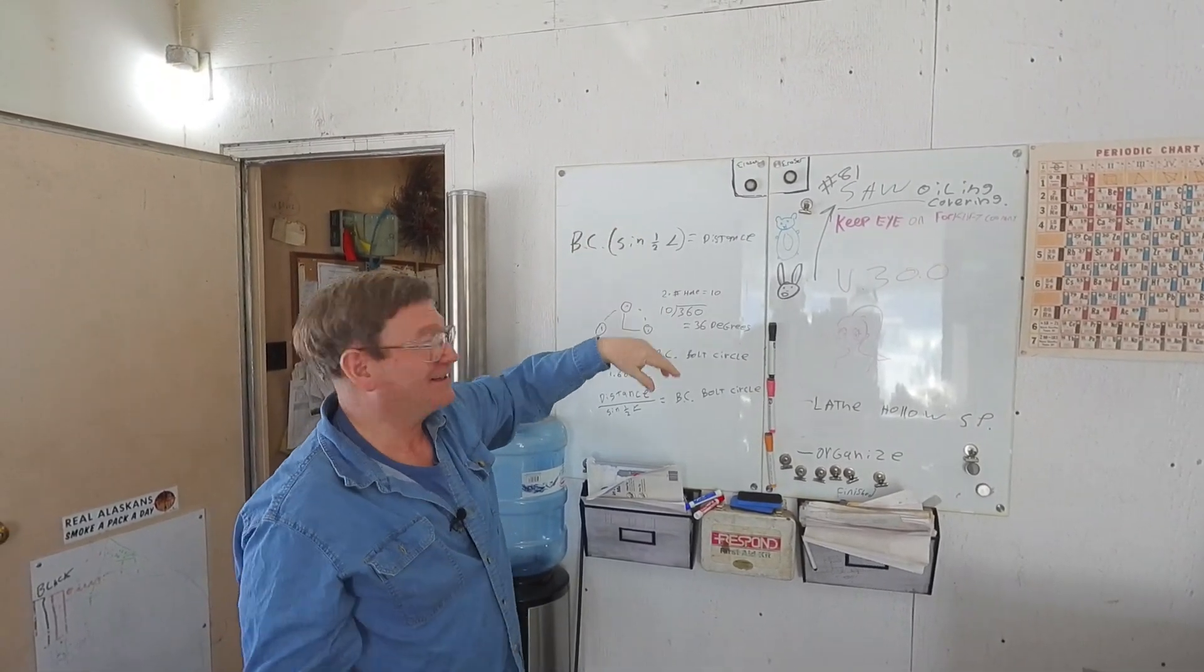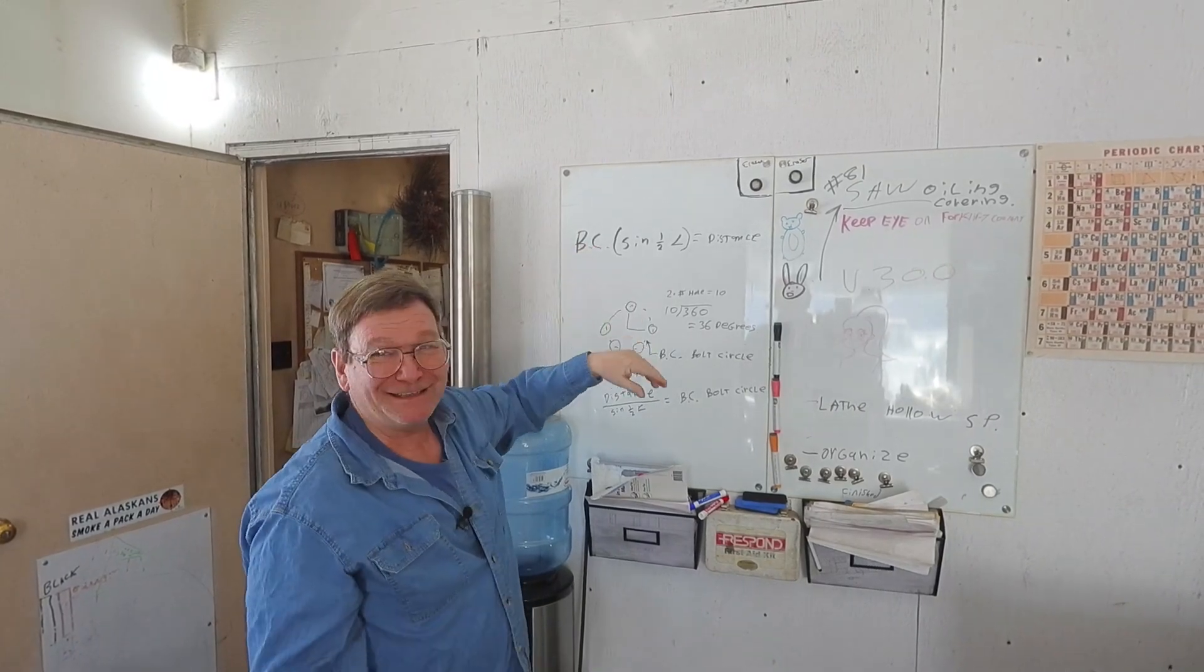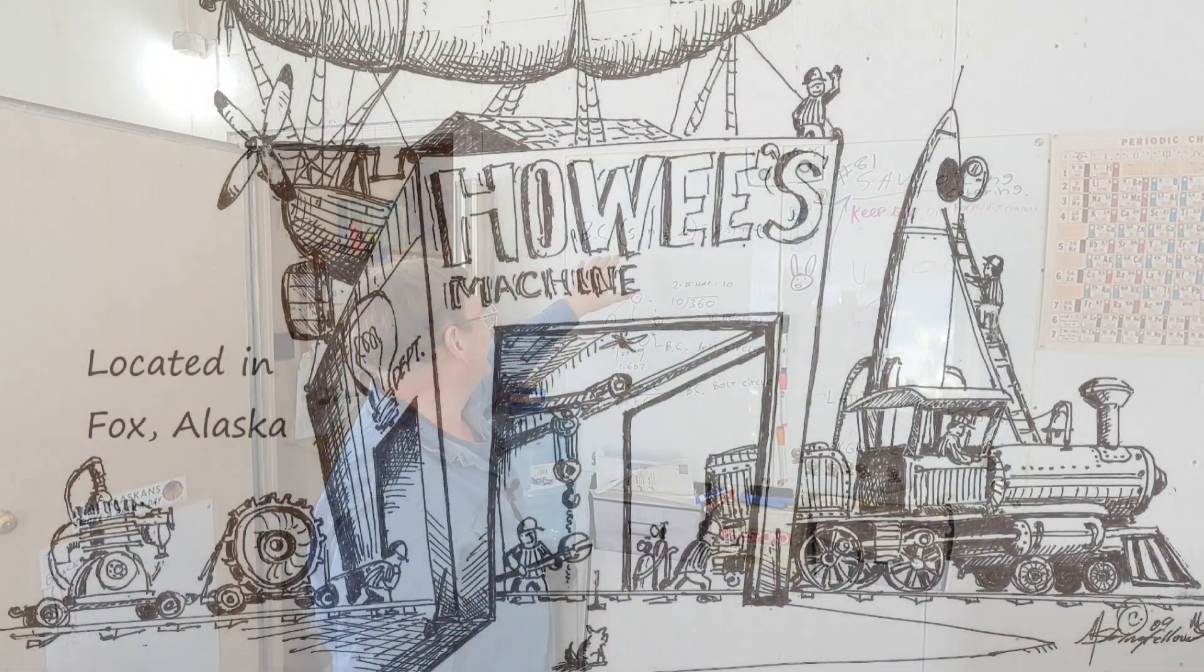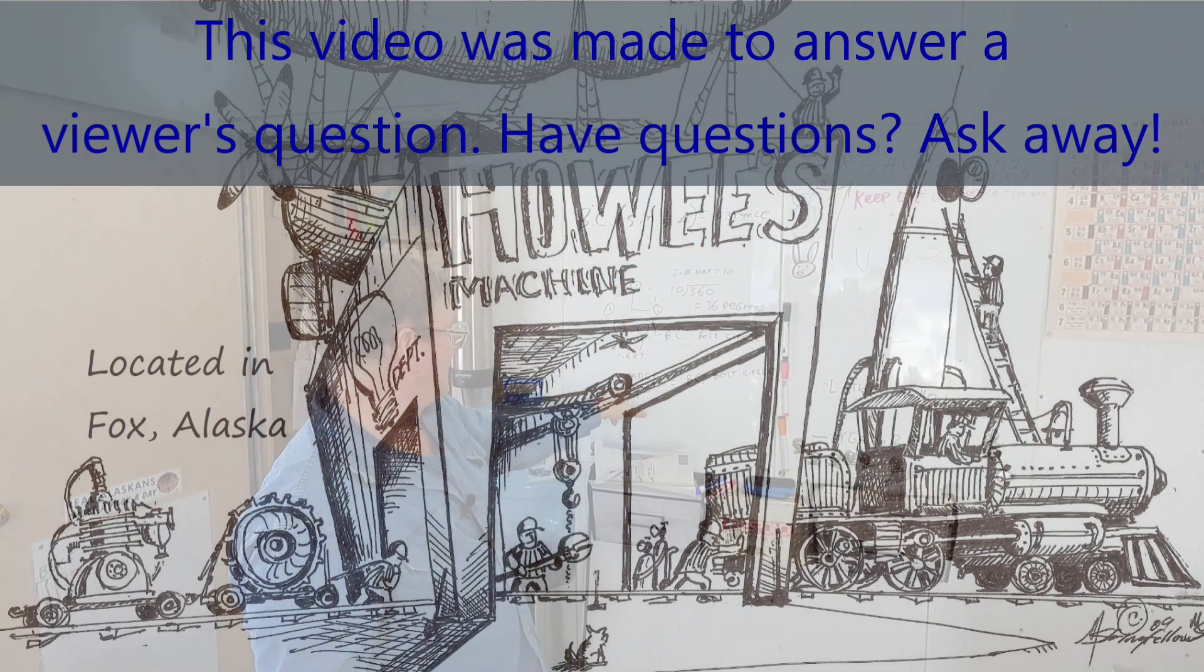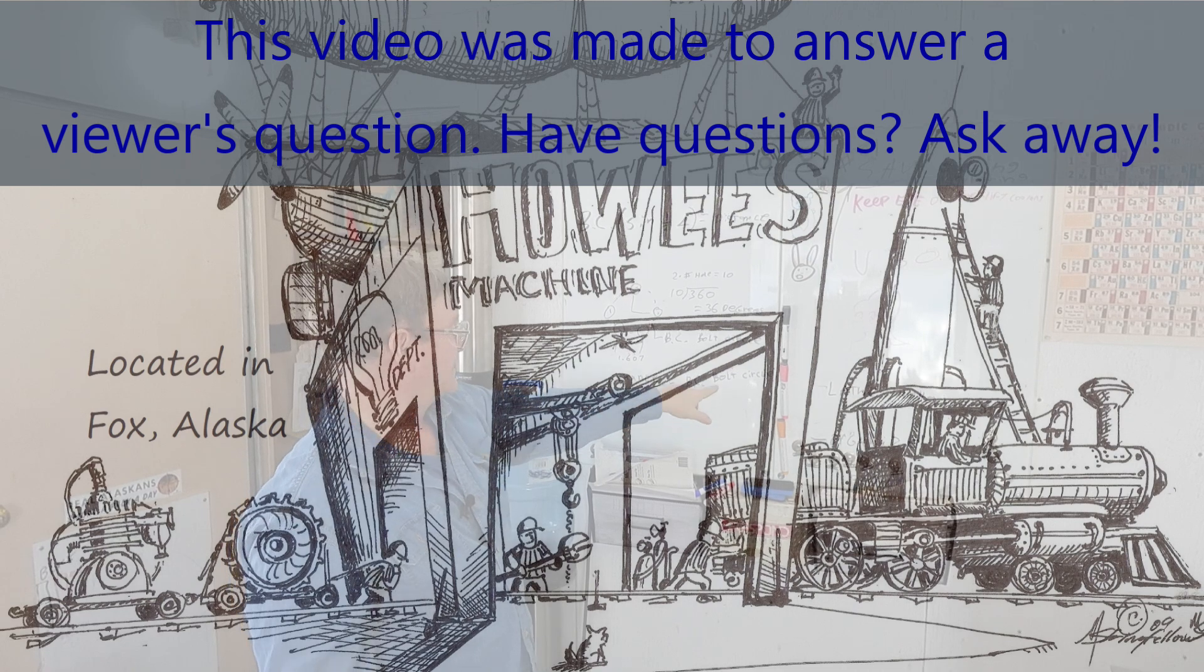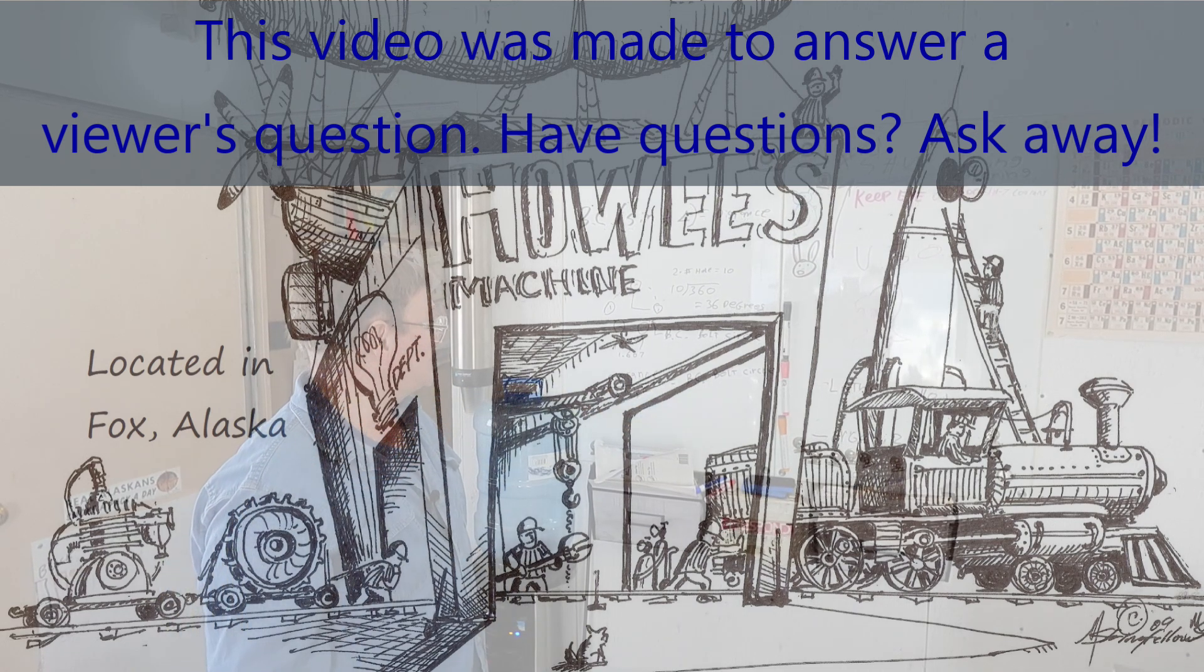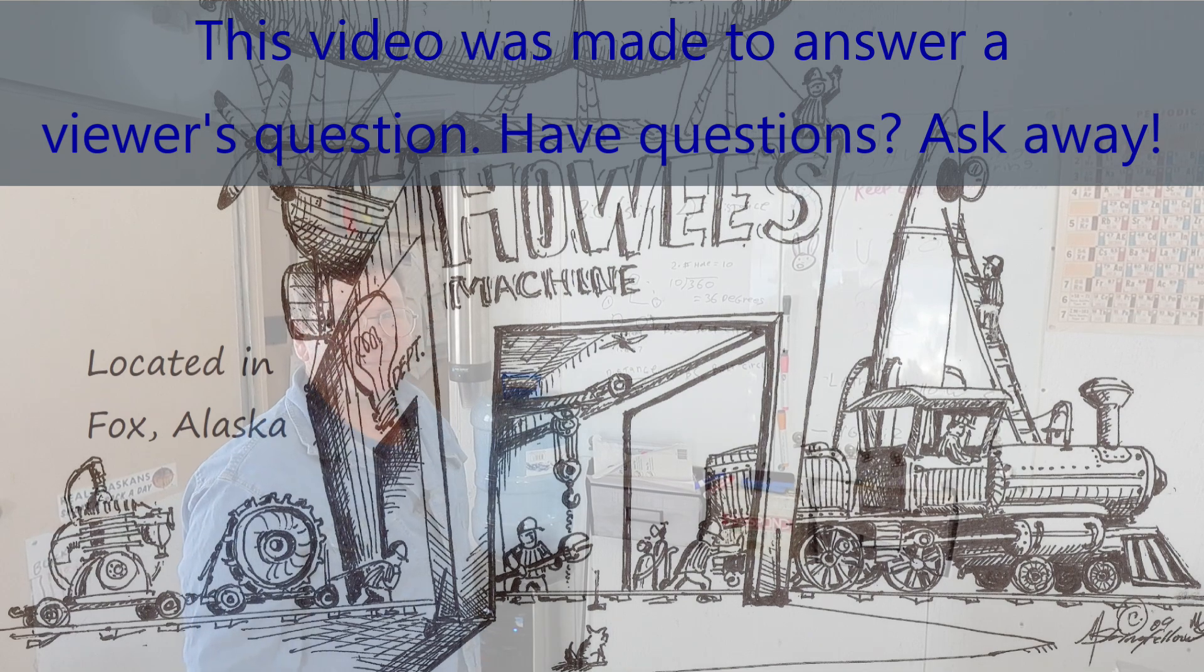Or come back to the video, watch it again, like it again. Yeah, just come on around again. That's how you get your distance between your holes. If you know the distance between your holes, this is how you get your bolt circle. And it's a handy little bit of math.